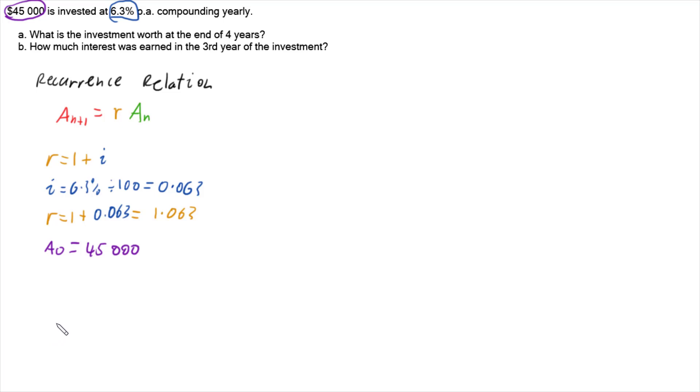So now I can start answering my questions because I have this recurrence relation that says that each year's amount at the end of each year is going to be 1.063 times by how much we had each year, where our first year is $45,000. So now let's have a look at part a. Part a, what was the investment worth at the end of four years?